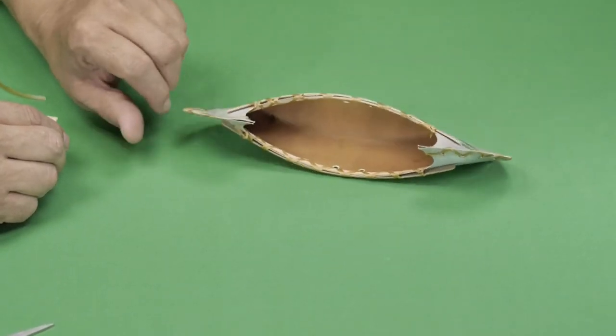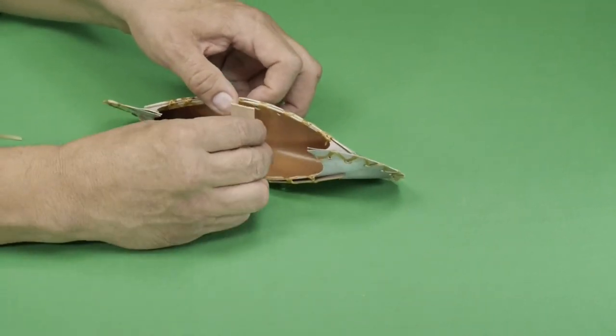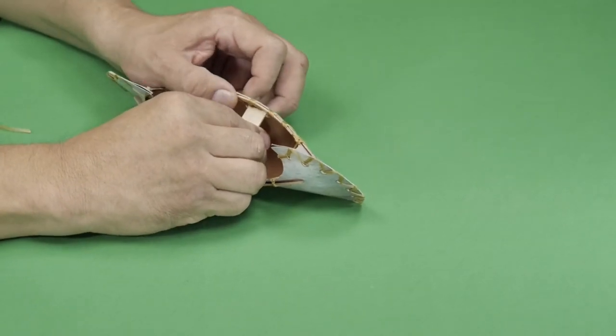For the last step of the project, slide in the small wood crosspiece seat in the middle of the canoe. No glue is required.